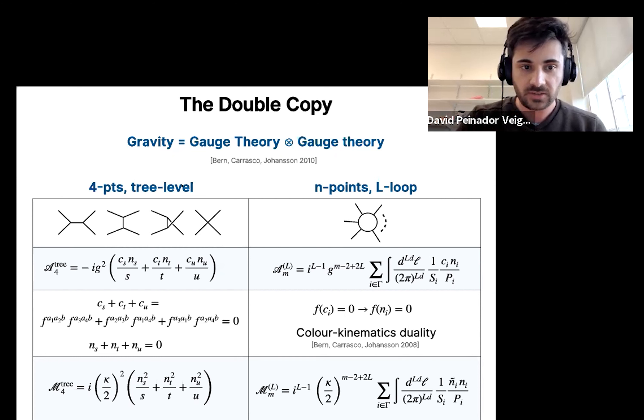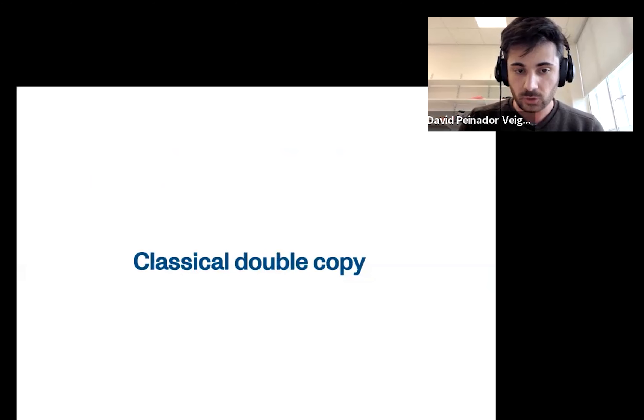So again, let me emphasize that, as we see here, we are doubling up the kinematic degrees of freedom from gauge theory to obtain a gravitational theory. But I want to study this in a classical setting, so does this have any implications for classical gravity?